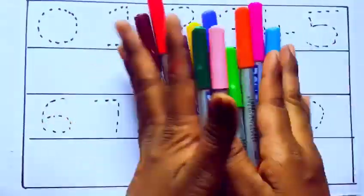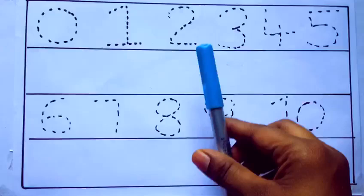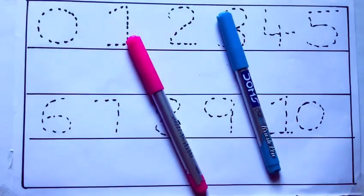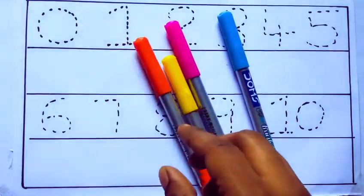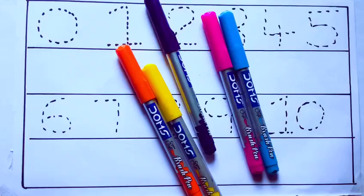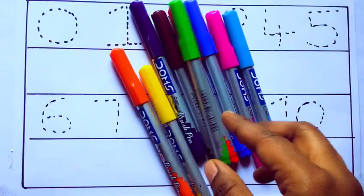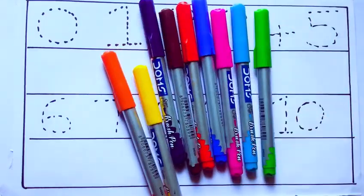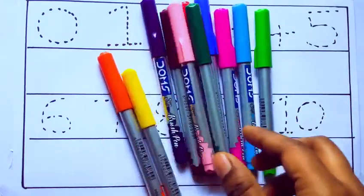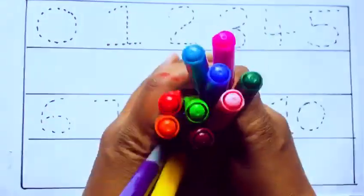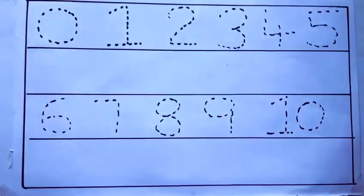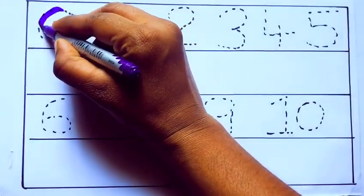Let's learn some colors. These are all the color pencils. Let's learn the names: sky blue color, pink color, yellow color, orange color, violet color, blue color, brown color, red color, green color, blue green color, and pink color.